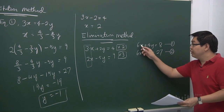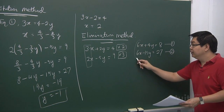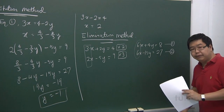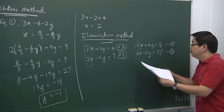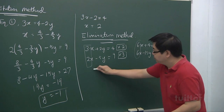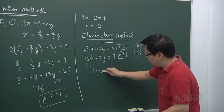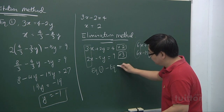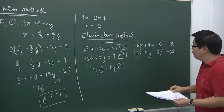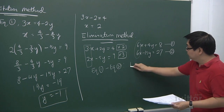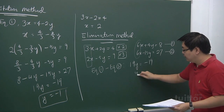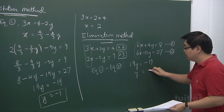The elimination method tries to make sure the coefficient of one of the unknowns is the same, so that you can use equation 1 minus equation 2. Doing equation 1 minus equation 2, we get 19y equals minus 19, and hence y equals minus 1.